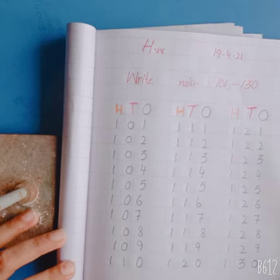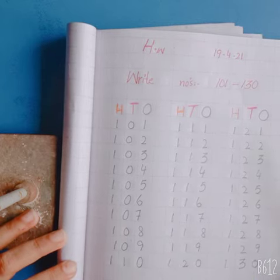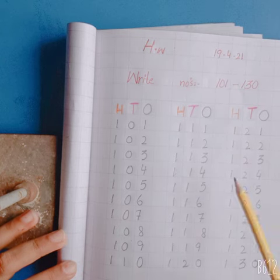So kids, now it's your turn to write numbers from 101 to 130 on your maths copy.